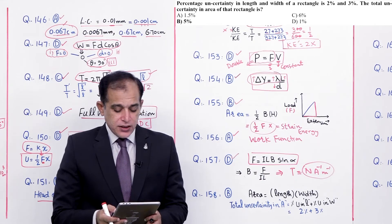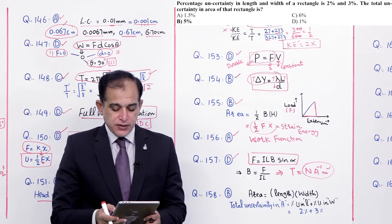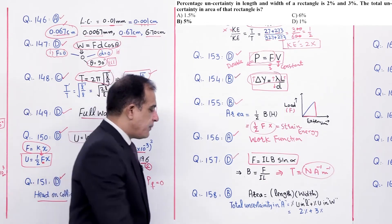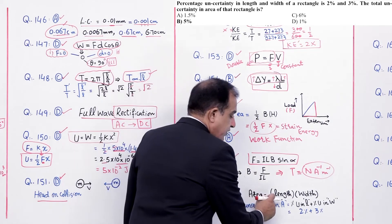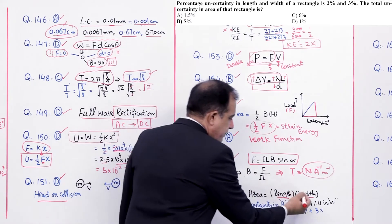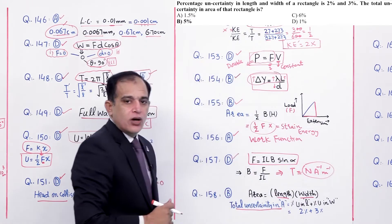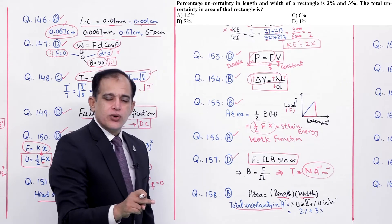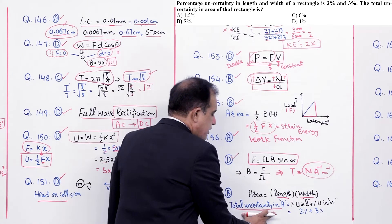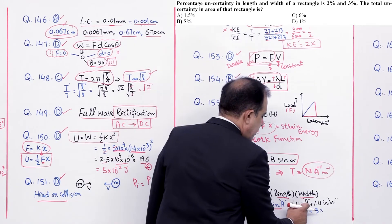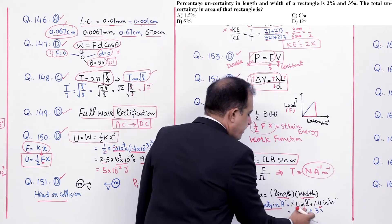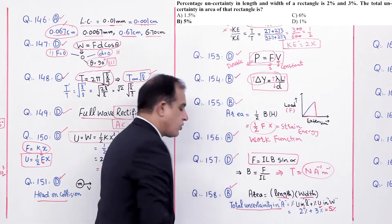Question number 158: Percentage uncertainty in length is 2% and width is 3%. Total uncertainty in area of rectangle. Area = L × W. Jab do physical quantities multiply hon, total uncertainty = sum of their percentage uncertainties = 2% + 3% = 5%. Correct option: Beta.